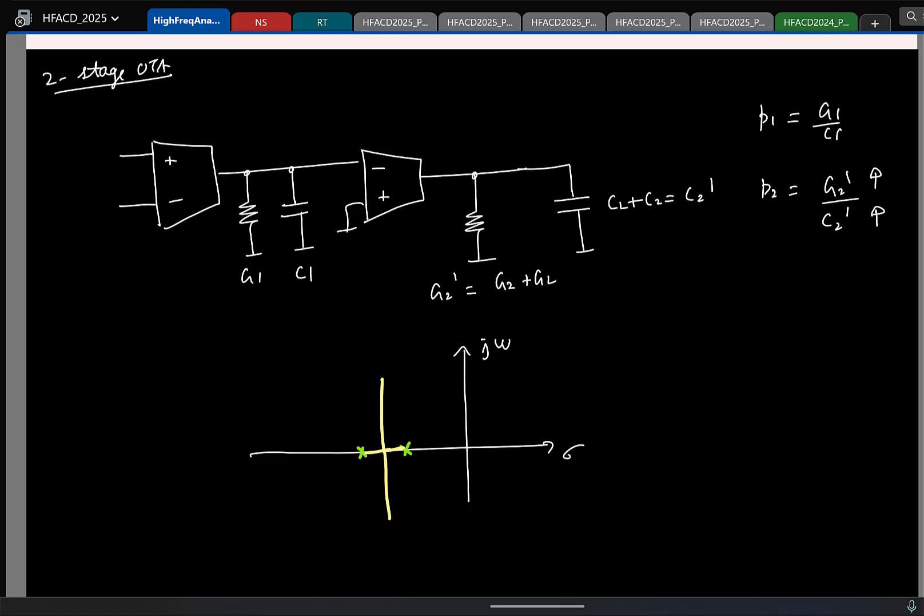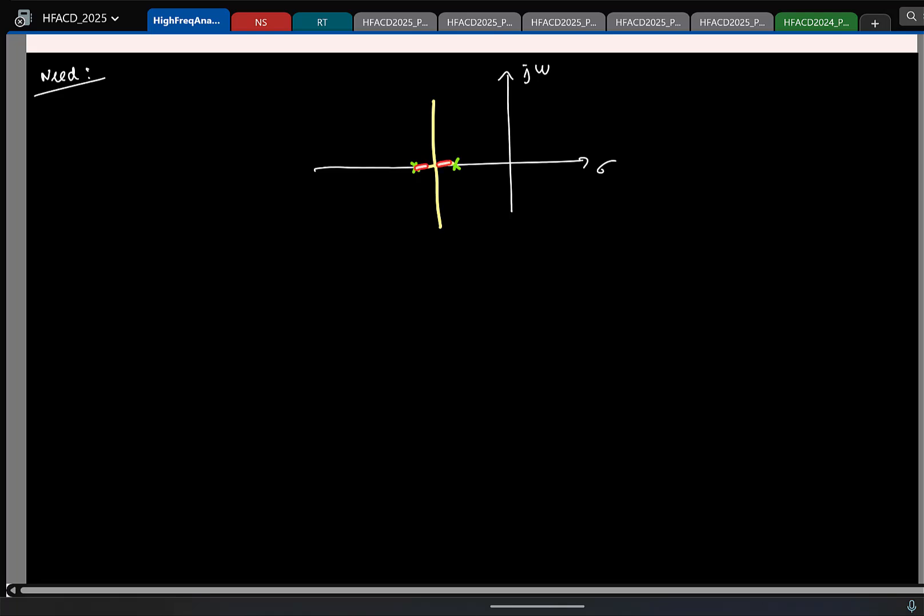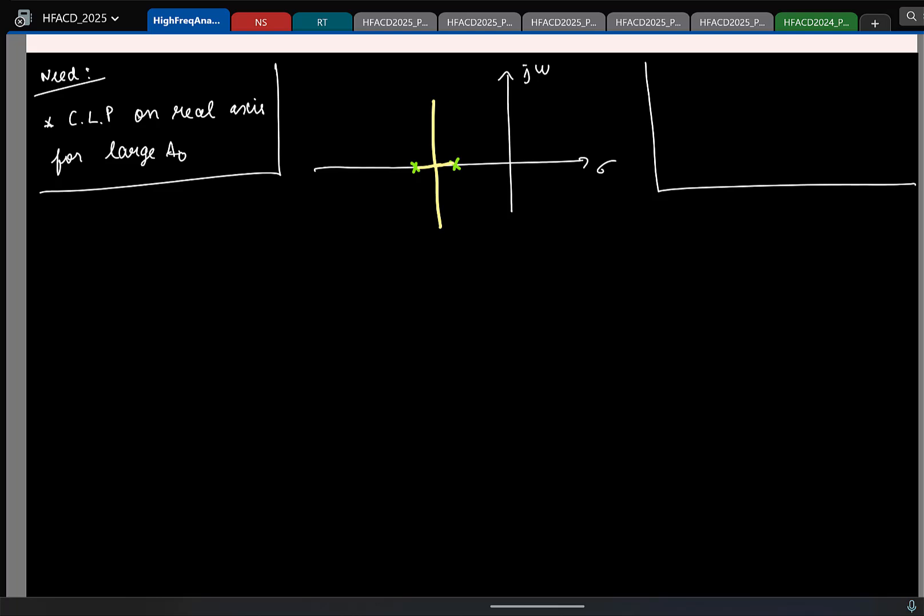So let us see how we can make this system stable. And for that, let me mention what is the need we want. Where do you want the closed loop poles to lie on? Real axis. And remember, here also the closed loop poles are lying on the real axis, but only for a small value of DC gain. But you want the closed loop poles to lie on real axis for small values of DC gain or large values of DC gain? I will say we want this to lie on real axis for large A0. And you also know from root locus that the closed loop poles actually start on the real axis. So I will say closed loop poles actually start on the real axis.